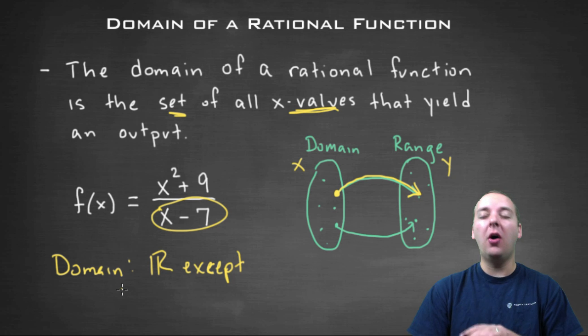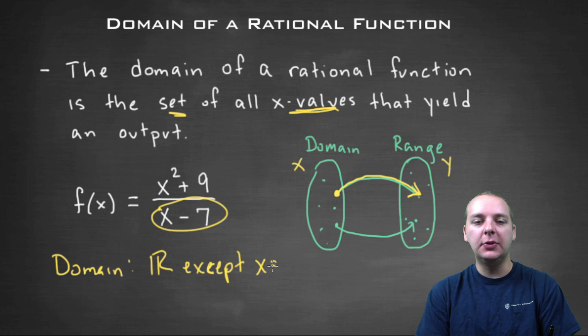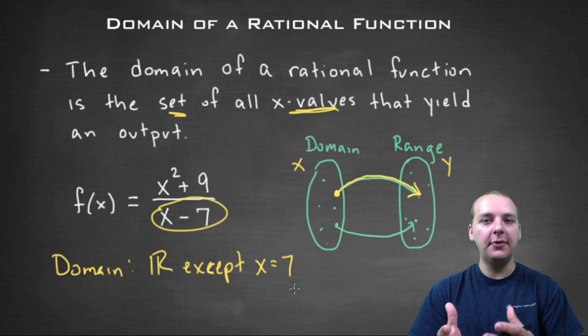So our domain would be all real x values, except x equals seven, because you can't have seven because again it would give you division by zero.